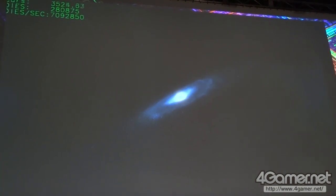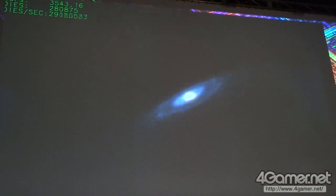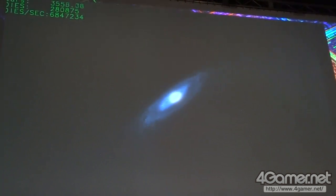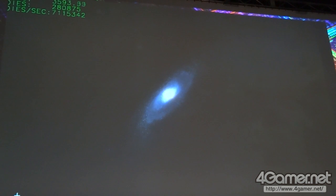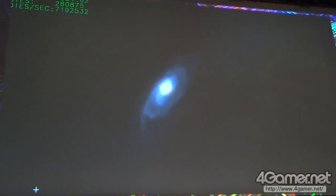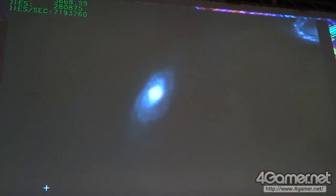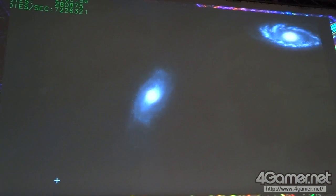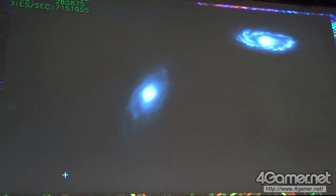We now have 280,000 stars interacting between the two galaxies. This simulation actually shows that in about 3.5 billion years from now, these galaxies are going to collide. So get your affairs in order.